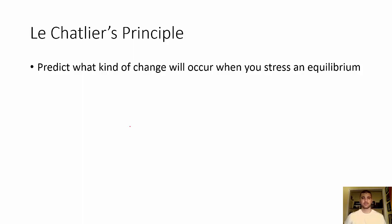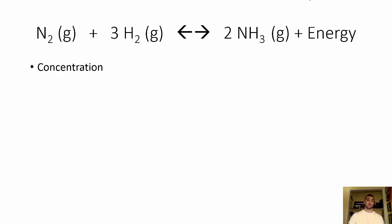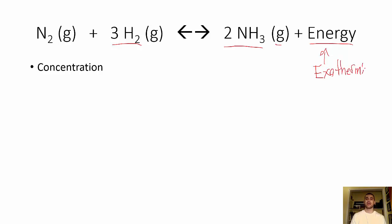Hello again ladies and gentlemen, Mr. Rowney here. We're going to talk about Le Chatelier's Principle, which has to do with equilibrium, and we want to be able to predict what kind of change will occur when you stress an equilibrium. So let's take a look at an equilibrium that will come up a lot. We've got N2 gas reacting with 3H2 gas, giving us 2NH3 gas and energy. This energy is on the product side, which tells us it's exothermic. This is going to be at equilibrium until we mess with it.